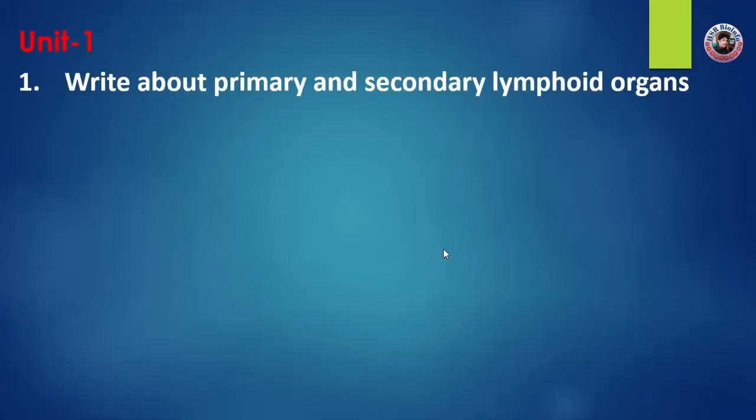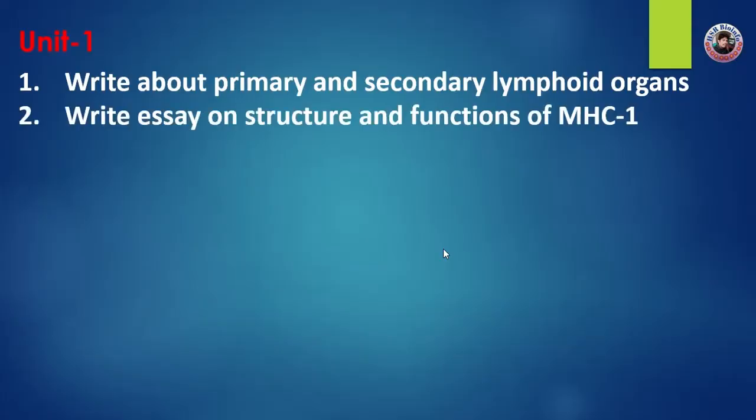In Unit 1, the first question is to write about primary and secondary immune organs. Question number 2: write an essay on the structure and functions of MHC — Major Histocompatibility Complex Class 1.